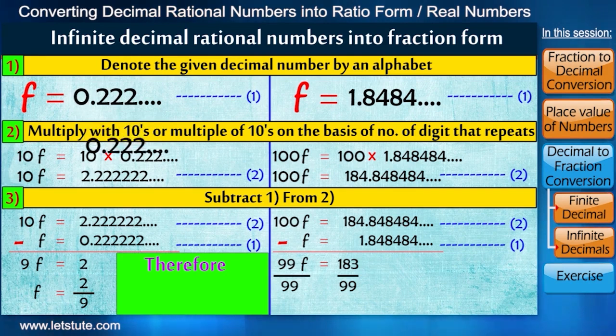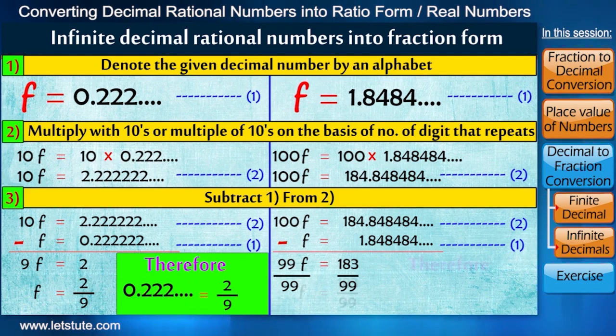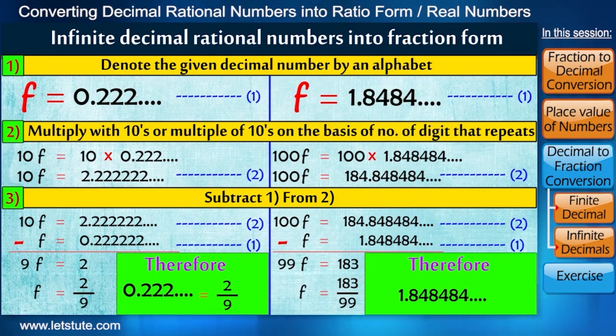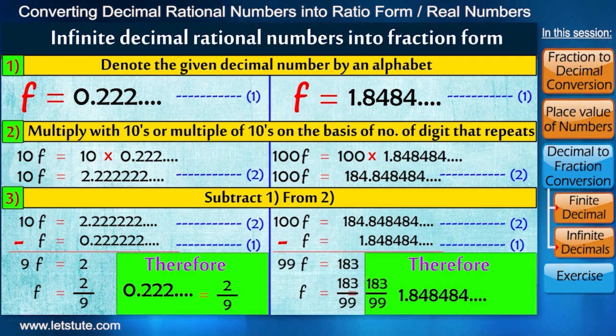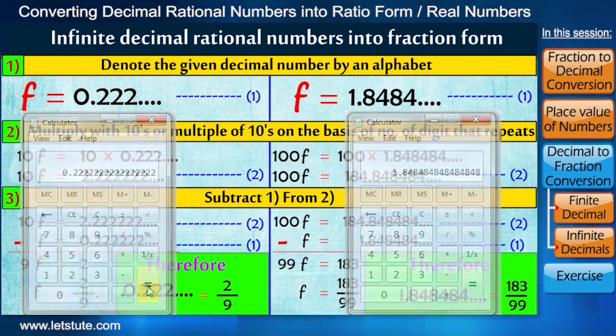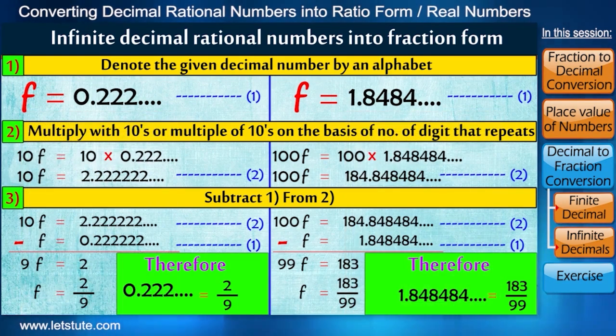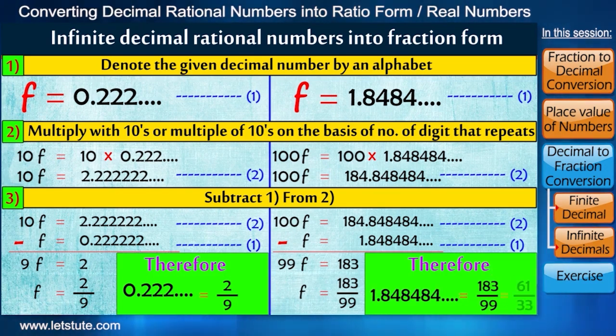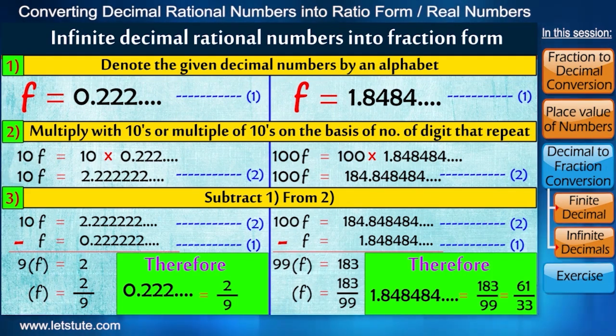We now divide both the sides by 9 and here by 99. So we have got the fraction 2 upon 9. This means the decimal number 0.222... is equivalent to the fraction 2 upon 9. And 1.848484... is equal to the fraction 183 upon 99. We can again cross-check this. Now note one more thing here, the fraction 2 upon 9 is already in its simplest form. But the fraction 183 upon 99 can be again written as 61 upon 33 in its simplest form.